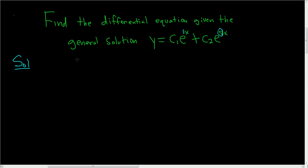So we have two roots, m equals 1 and m equals 8. That means m minus 1 and m minus 8 are factors of the characteristic equation.